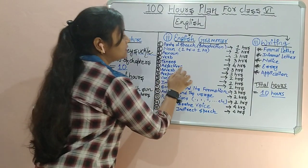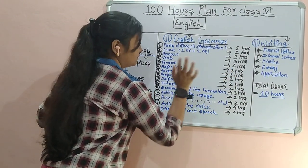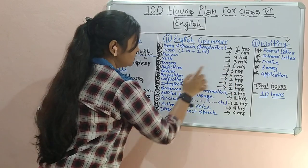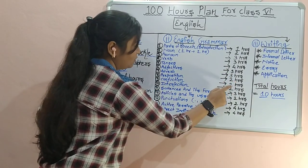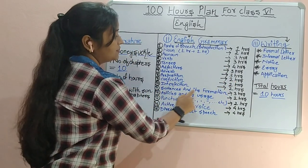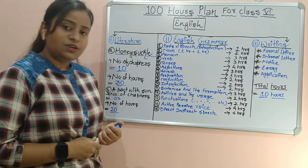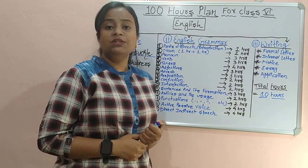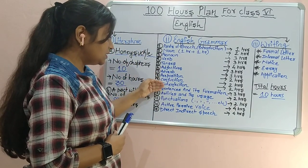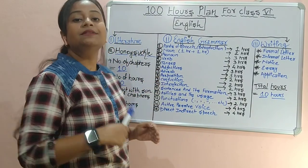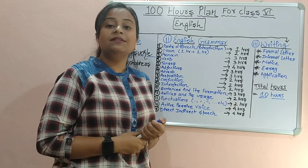Then Adjectives will take approximately three hours. Adverb will take three hours. Preposition will take two hours. Conjunction will take two hours. Interjection will take two hours. In the first hour we will learn about the chapter — preposition, conjunction, interjection — and the remaining one hour we will practice questions.